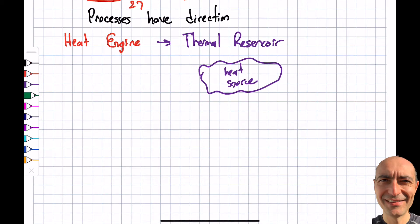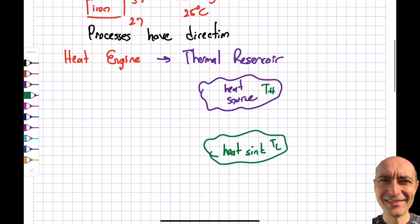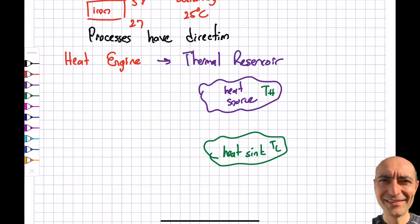I also want to introduce the heat sink. The heat sink is essentially the opposite of the heat source — it's the low temperature reservoir, sometimes labeled T_L. Because of the second law, when operating an engine between two thermal reservoirs, I must dump some heat into this low-temperature heat sink.